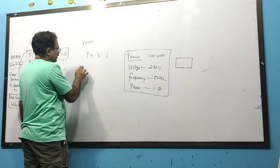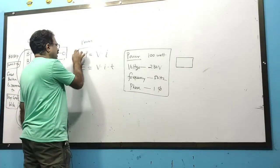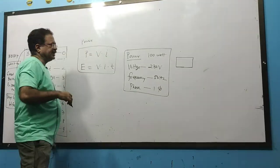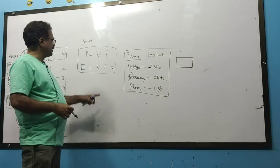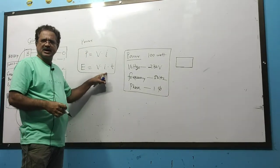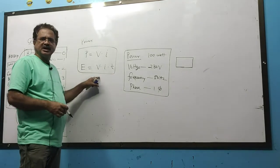And if we want to find out energy used by it, then it is V into I into T. You have studied Joule's law, I will not go into detail. If potential difference V is applied and current I is passed through that equipment for T time, then amount of energy used by it is given by V I T.